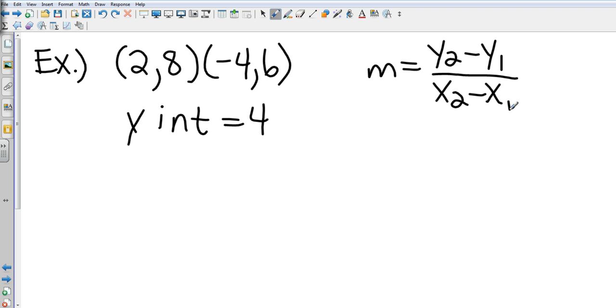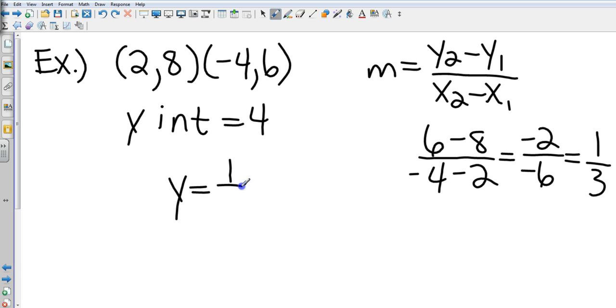That's going to be y2 minus y1, so 6 minus 8, and then on the bottom we've got x2 minus x1, that's going to be negative four minus two. That gives me a slope of negative two over negative six, which reduced—negative over negative is positive—so that's one-third.